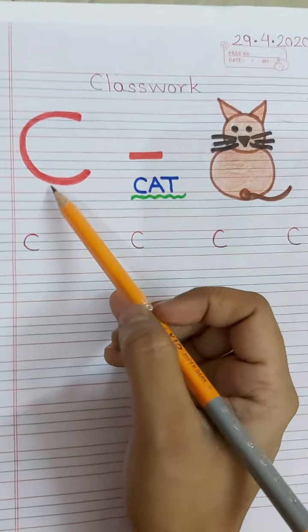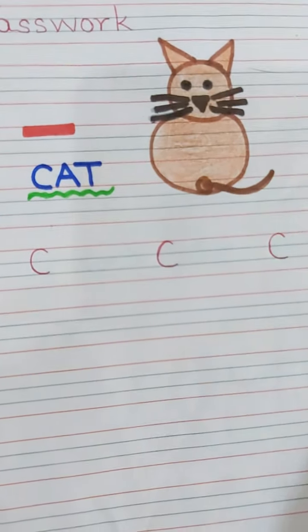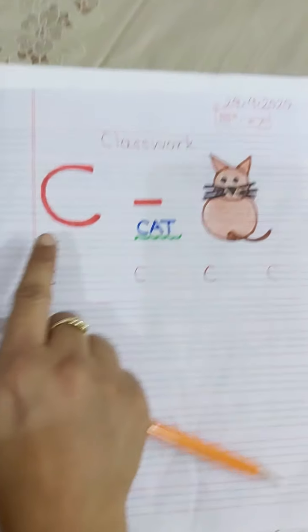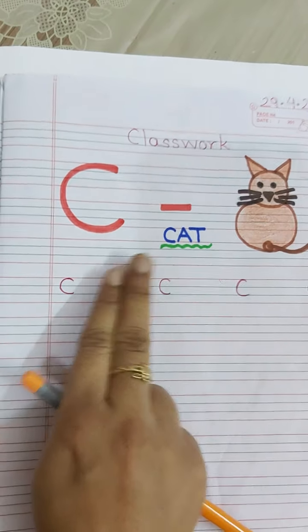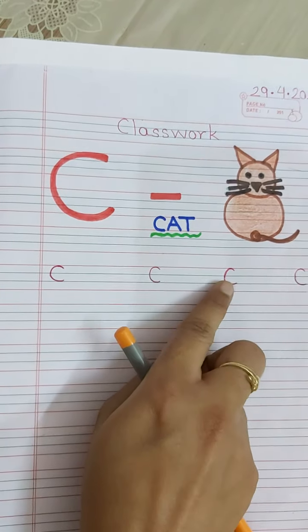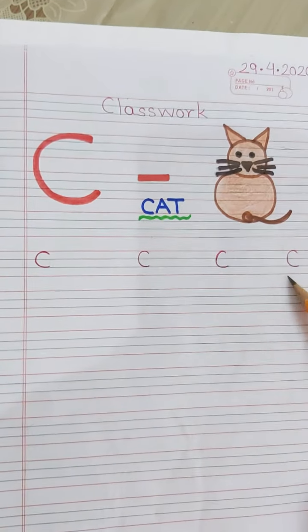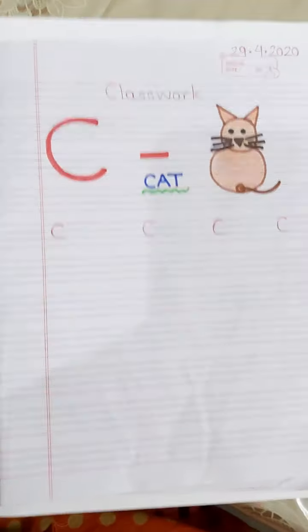And parents, aapko ek C banana hai, then dash, then you have to make a cat. Look here. You have to make a cat. And then, aapko four times C likna hai. C, then two finger gap C, two finger gap C, then two finger gap. One, two, three, four. Four times aapko C likna hai. Okay parents? Look here. Okay.